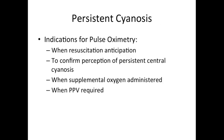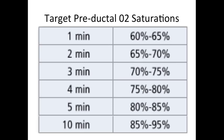Indications for pulse oximetry include when resuscitation is anticipated, to confirm perception of persistent central cyanosis, when supplemental oxygen is administered, or when PPV is required. The following chart describes target pre-ductal O2 saturation goals based on minutes of life, and can be used to determine whether supplemental oxygen is needed.